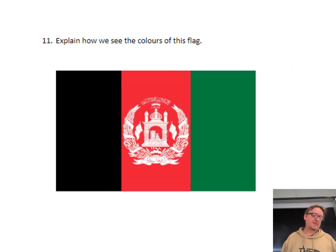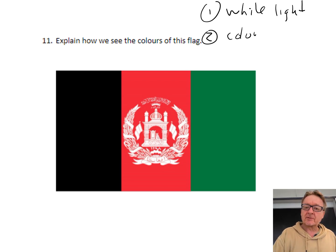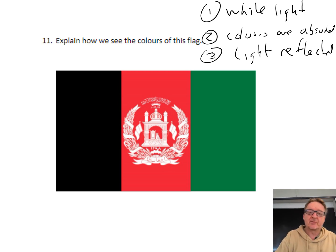Explain how we see the colors of this flag. You've got white light shining onto the flag. Number one, white light shines onto the flag. Number two, colors are absorbed. And number three, some light is reflected. So we deal with each one individually. Number one, the black. White light is shone onto that, Richard of York gave battle in vain, and with black, they're all absorbed. So there is no light reflected at all. Number two, the red bit in the middle. Richard of York gave battle in vain is all shone on it. They're all absorbed except red, and the red is then reflected back into your eye.